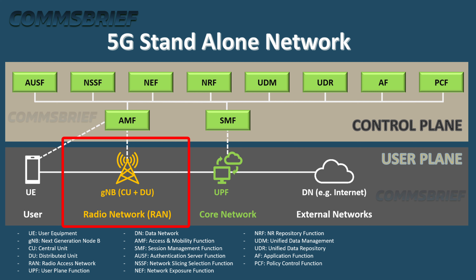gNB, or gNodeB, is the Next Generation Node B. A gNB may be split into two entities: gNB Central Unit (CU) and gNB Distribution Unit (DU). Both the central and distribution units can be implemented in the same gNB location, but it is possible to have the distribution unit closer to the end user. The DU is closer to the site, whereas the CU, as the name suggests, can be at a central location.